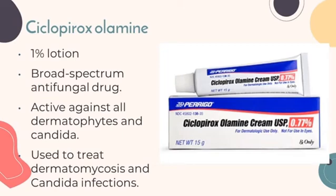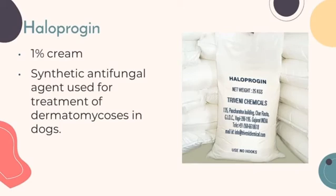Another example of topical antifungal agents is ciclopirox olamine, a 1% solution that is a broad spectrum antifungal drug. It is active against all dermatophytes and Candida species, and is used to treat dermatomycosis and Candida infections. Haloprogrin is a 1% cream that is a synthetic antifungal agent used for treatment of dermatomycosis in dogs.